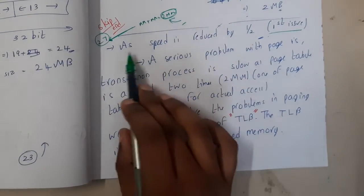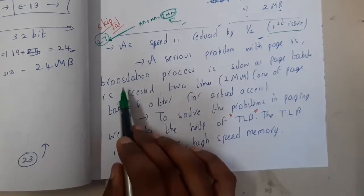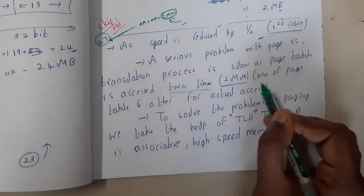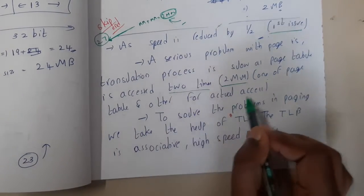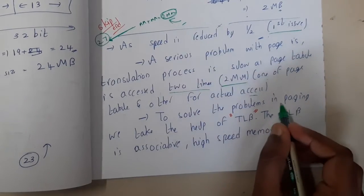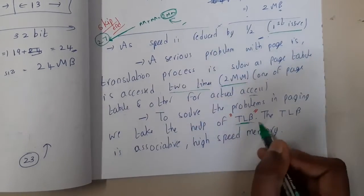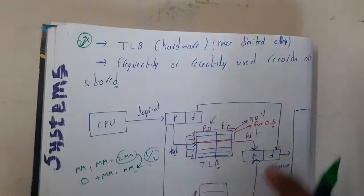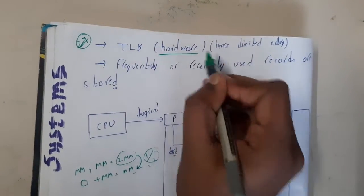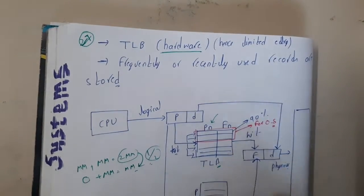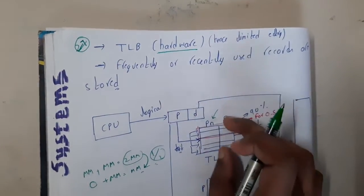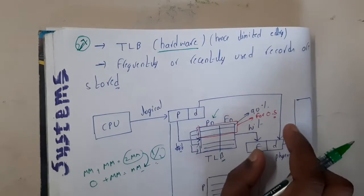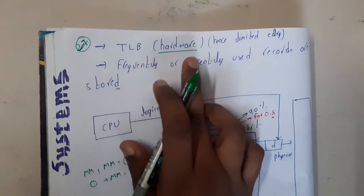A serious problem with paging is that the translation process is slower because the page table is accessed two times — that is 2MM: one for the page table and one for actual data access. To resolve this, we use TLB — Translation Look-ahead Buffer. TLB is associative high-speed memory. It is ultra-fast because it is a hardware component, so only a limited number of entries will be stored.